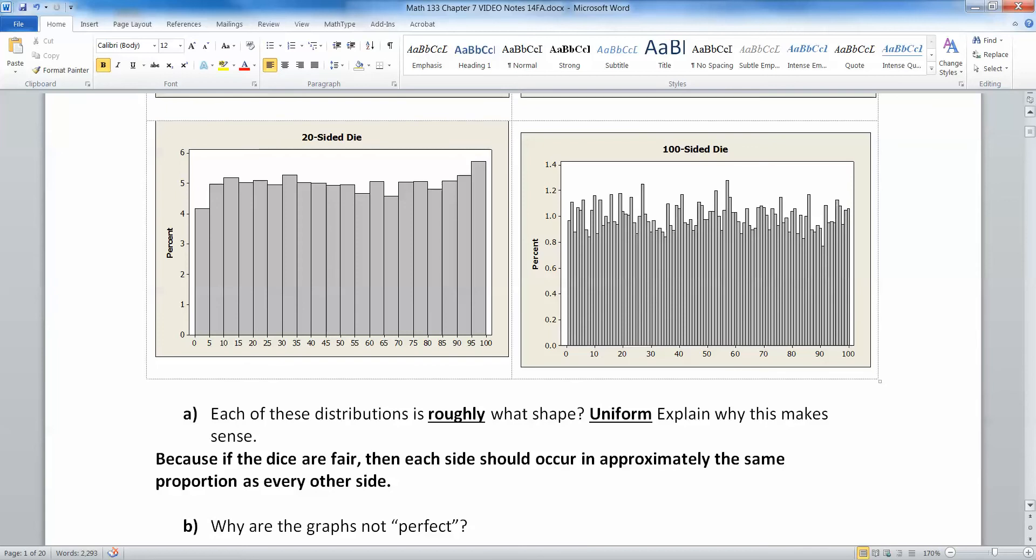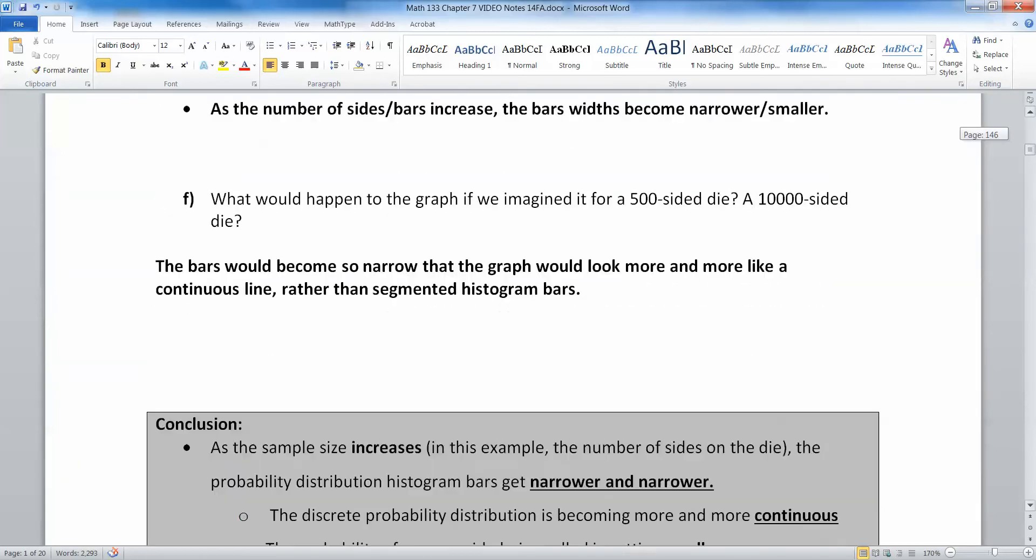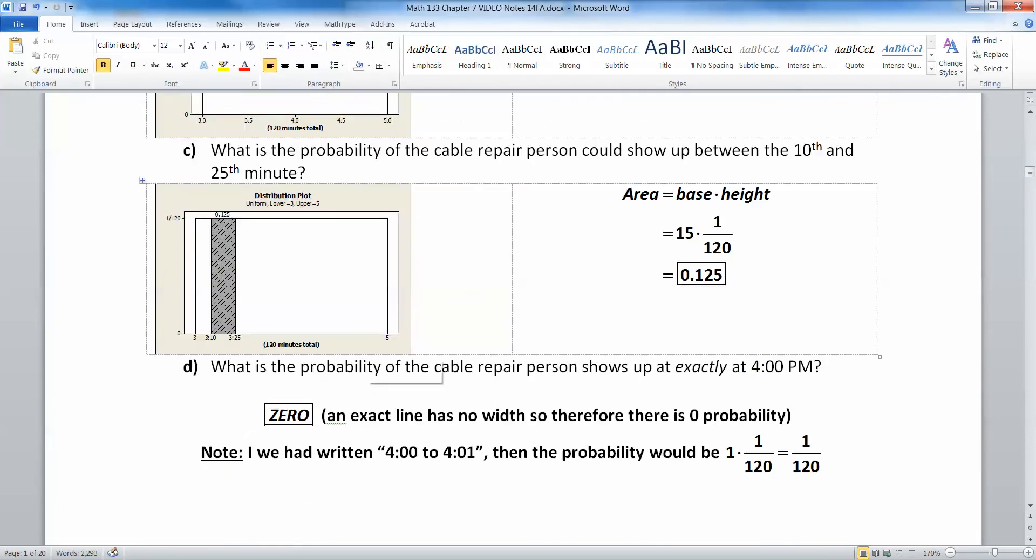The bars become narrower and narrower. Every one probability becomes smaller and smaller to the point where it basically becomes zero, which is what happens when the curve actually is continuous, which we noticed right here.